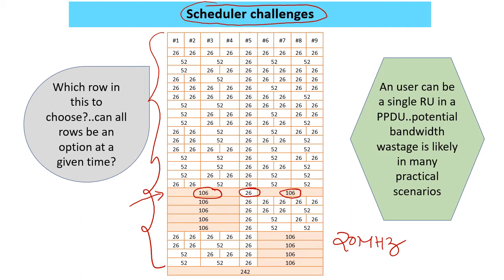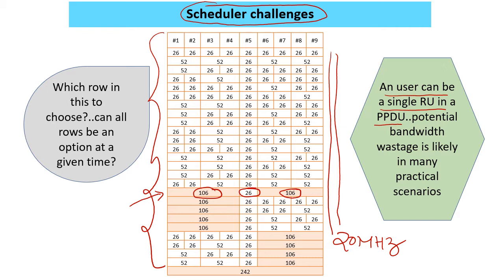This is because in Wi-Fi 6, a single user cannot be given more than one RU in a PPDU. Wi-Fi 7 will improve on that. But these are some inflexibilities. And if you look at all these possibilities, a practical scheduler cannot evaluate all these possibilities at every given instant, so it should have some subset worked out. Those could be the ones it will have to make a choice from.